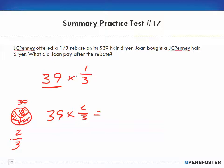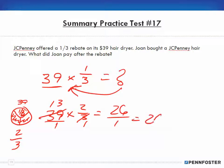So 39 over 1. 3 can go into 3 one time, and 3 into 39 goes 13 times. So 13 times 2 is 26, and 1 times 1 is 1. I'm going to pay $26 for that hair dryer.